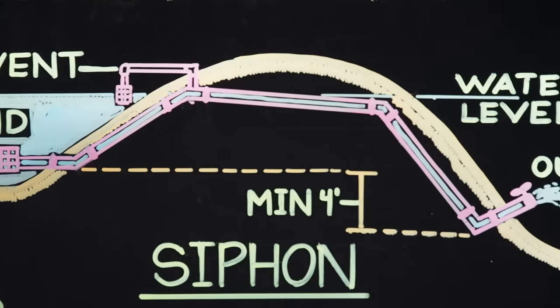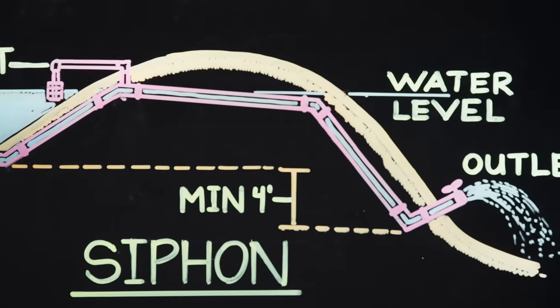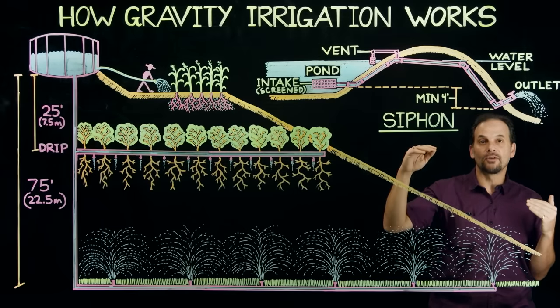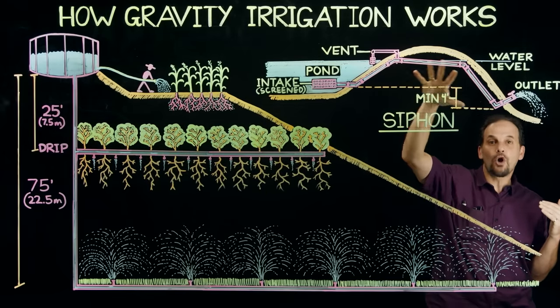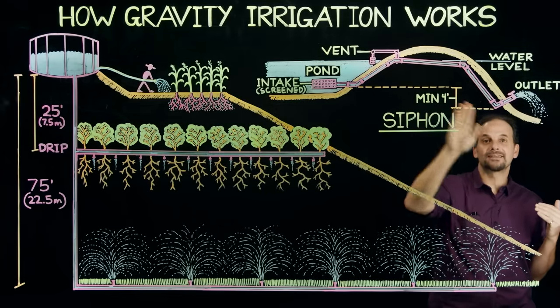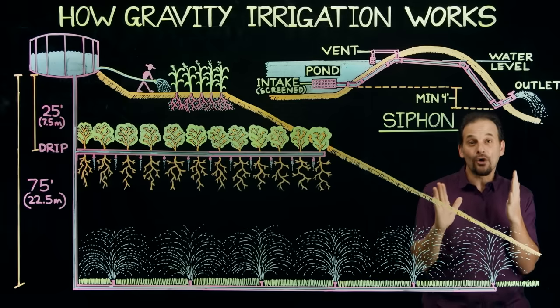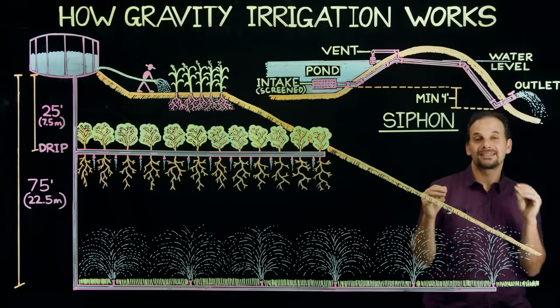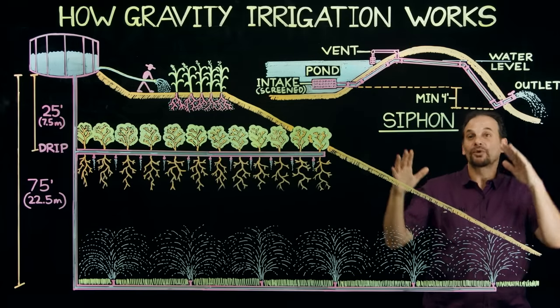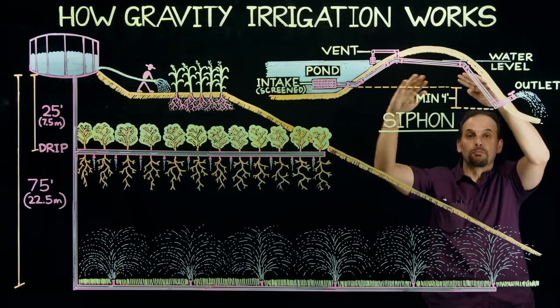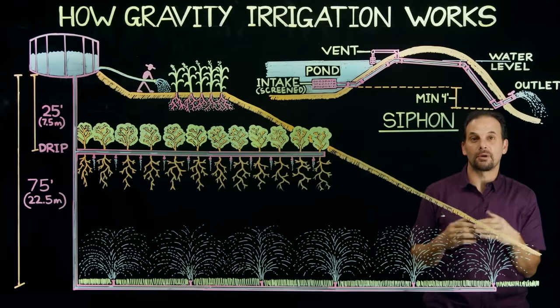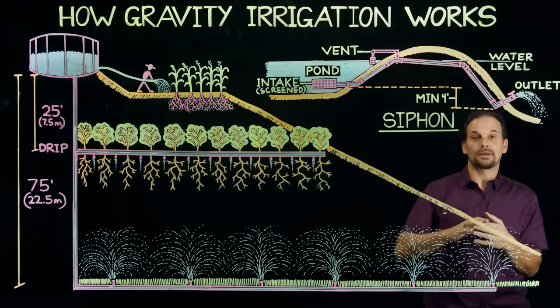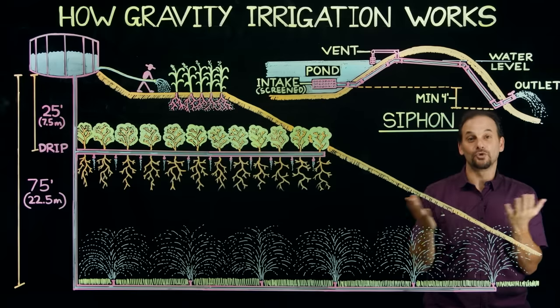But then the vent is closed and the siphon forms a suction. So even as the pond level goes down, the water gets pulled up and over this hump from the intake to the outlet. The vent is also there to release air from the top of the siphon system because an airlock can form where a giant air bubble blocks the water from coming through the pipes. It's really a brilliant way to get water up and over an embankment without needing to use fuel or electricity.